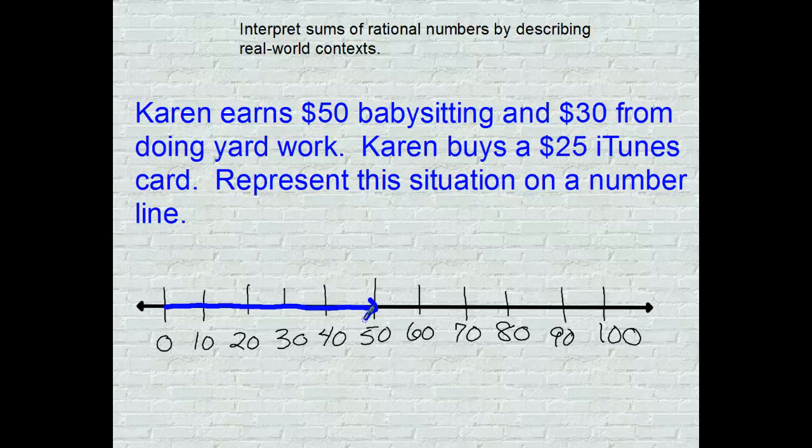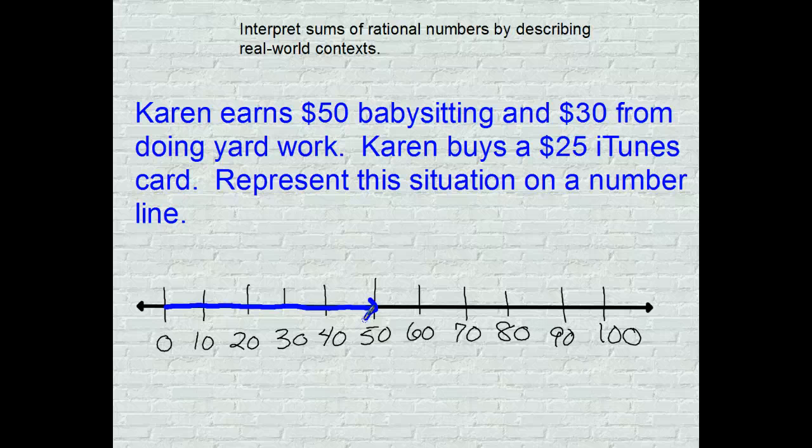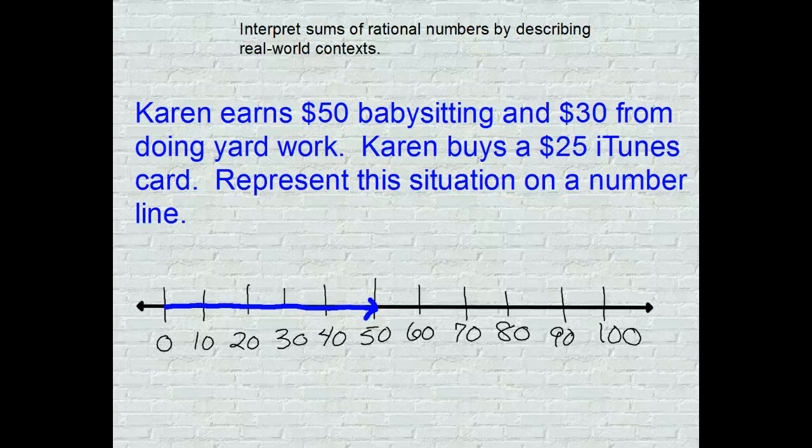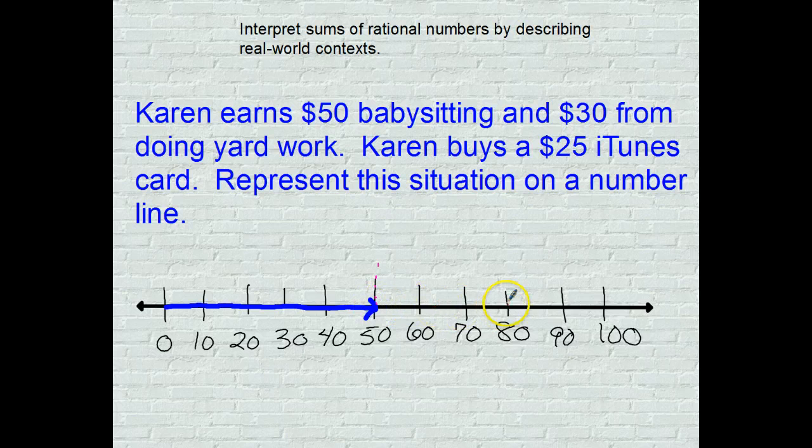The next part is babysitting for $30. Wait, let me read the problem. She earns $50 babysitting and then $30 more from doing yard work, so we're going to move an additional 30. She's making a lot of money here. So 10, 20, 30.